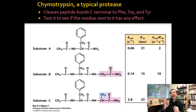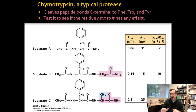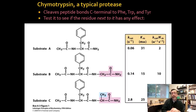Substrate B adds more backbone and it's about five times better. Then if they just add one methyl group at the right place — where the side chain should be — you get 10 times better. This suggests the side chain is particularly important to how the enzyme works. It's actually more important to catalysis than to binding, because the Km has gotten a little worse while the Kcat has gotten a lot better. That's why I'm saying adding a side chain is helping catalysis, not binding, when looking at substrate C.